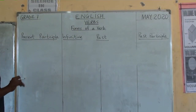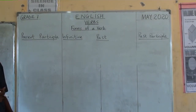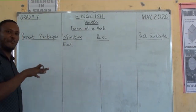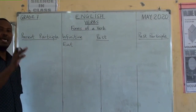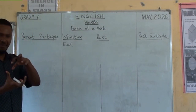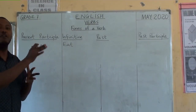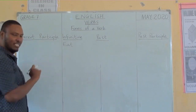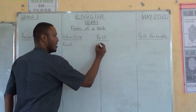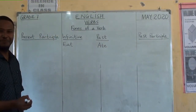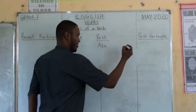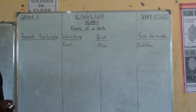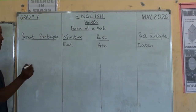Let us take a very simple example — the word 'eat.' Eat is in the infinitive form. The infinitive form is the present form and the basic form of a verb. Before you change the verb to the different forms, the infinitive form is what starts. What is the past form of eat? It changes to 'ate.' What is the past participle form of eat? It is 'eaten.' What is the present participle form of eat? Eating.